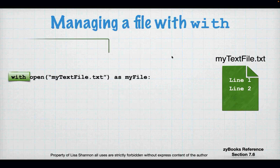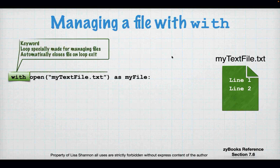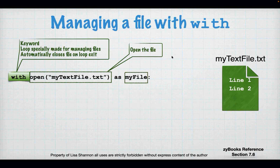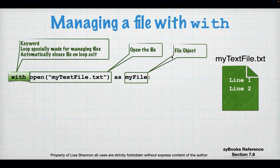So managing a file with the word with. With is in fact a new keyword — it's made for managing files. And it automatically does the close for you. The syntax is: you use the word with, and then you have your open as you would normally have an open — it's the same function. And then you have the keyword as, and then you give it the file object — the file descriptor. So anything I do associated with the file inside the loop is going to be done on that descriptor.